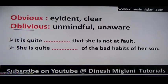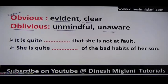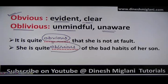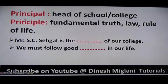Next: 'obvious' and 'oblivious.' Obvious means evident or clear. Oblivious means unmindful or unaware. Example: 'It is quite obvious that she is not at fault' — meaning it is quite clear. 'She is quite oblivious of the bad habits of her son' — meaning she is completely unaware of her son's bad habits.